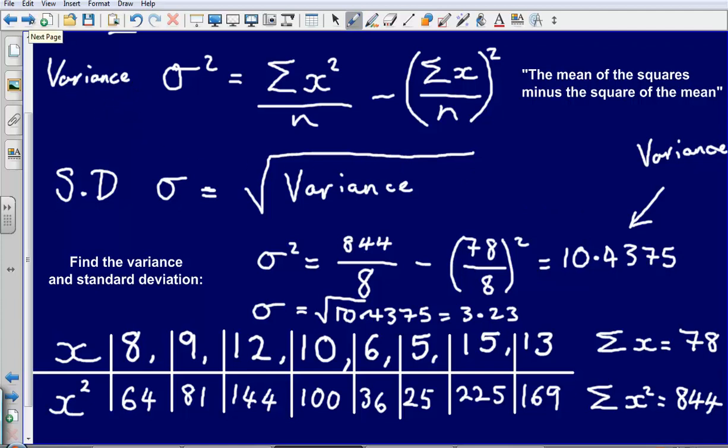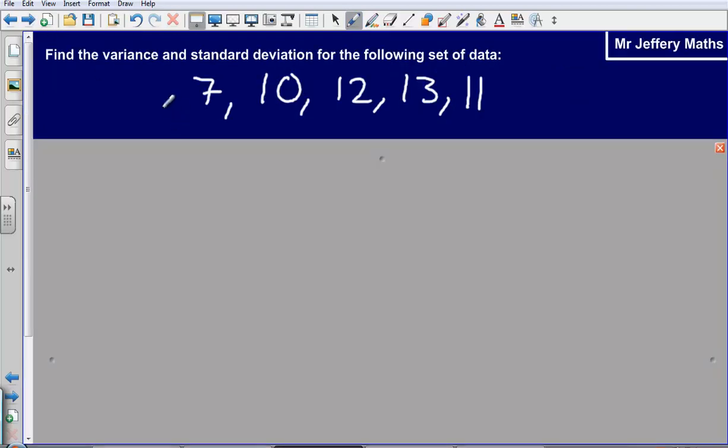Okay, hopefully you can follow this. If not, watch this part again and maybe take some notes. What I suggest you do now is you pause the video and attempt this question here. So you're asked to find the variance and standard deviation for the following set of data: 7, 10, 12, 13, and 11. So pause the video, attempt the question and then press play to see the answers.